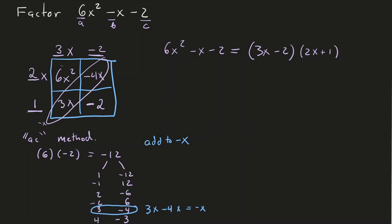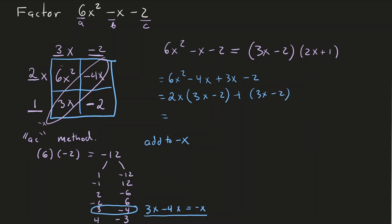Alternatively, replace minus x with 3x minus 4x to get 6x squared minus 4x plus 3x minus 2. The first two terms have a common factor of 2x, giving 2x(3x minus 2), and the last two terms give 1(3x minus 2), which factors as (2x plus 1)(3x minus 2) — confirming the same result.